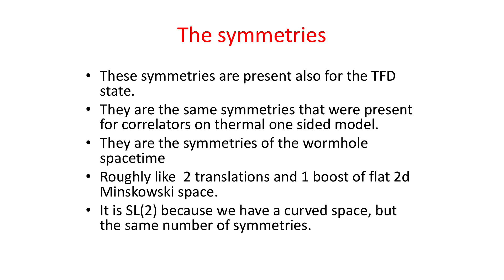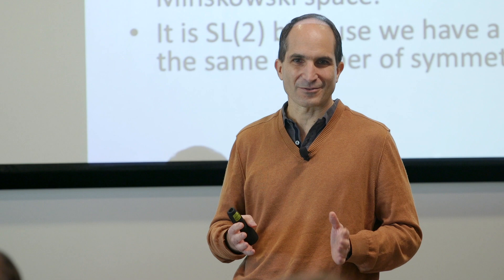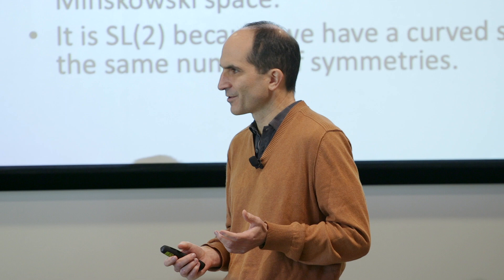These symmetries are present for the thermofield double state—the same symmetries as for correlators of thermal one-sided models—and they are the symmetries of the wormhole spacetime. The relevant symmetry group is SL(2), which is basically like two translations—time translation, space translation—and the boost symmetry of flat Minkowski space. Locally, at each point, they act like this. Because the space is curved, the actual group is slightly different—it's similar to the Poincaré group, or the group of relativistic field theory in 1+1 dimensions—really the group of relativistic field theories in curved 1+1-dimensional spacetime.